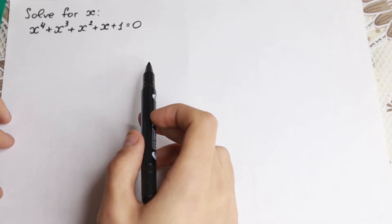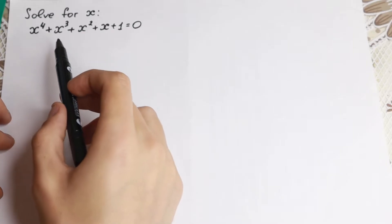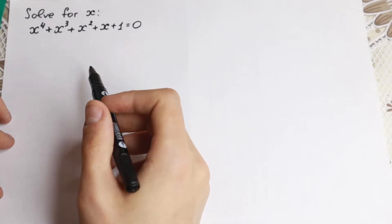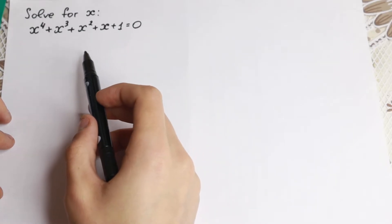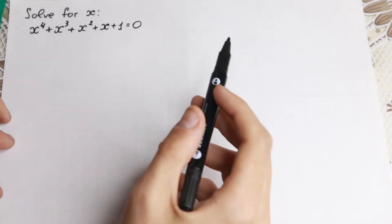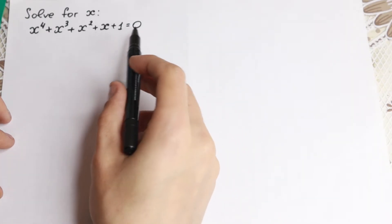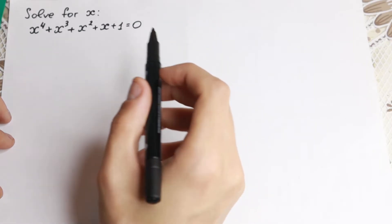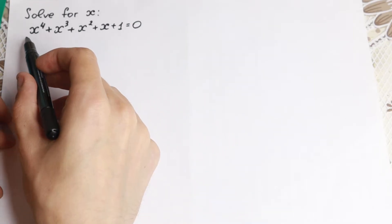We can see right now that we have a fourth power, so we have no more than four roots and we need to find them. There are a lot of methods to do this, but I want to show you a really good tricky method. First of all, let's divide both sides by x².